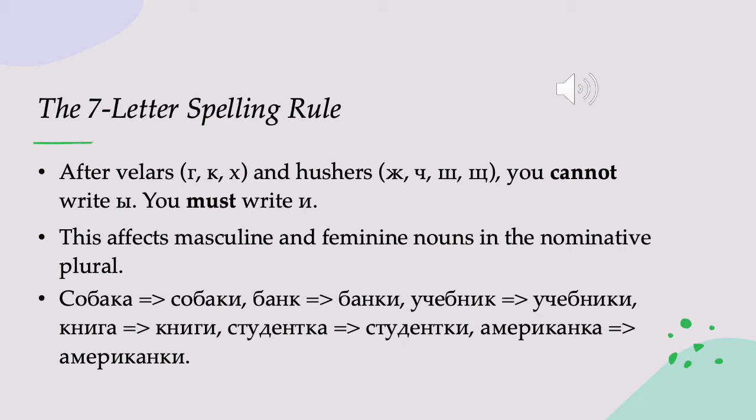This affects masculine and feminine nouns in the nominative plural. So for example, sobaka, dog, becomes sobaki — the stem ends in К so we add И, not Ы. Bank, a bank, becomes banki. Uchebnik, a textbook, becomes uchebniki. Knyga, a book, becomes knygi. Studentka, a female student, becomes studentki. Amerikanka, a female American, becomes amerikanki.